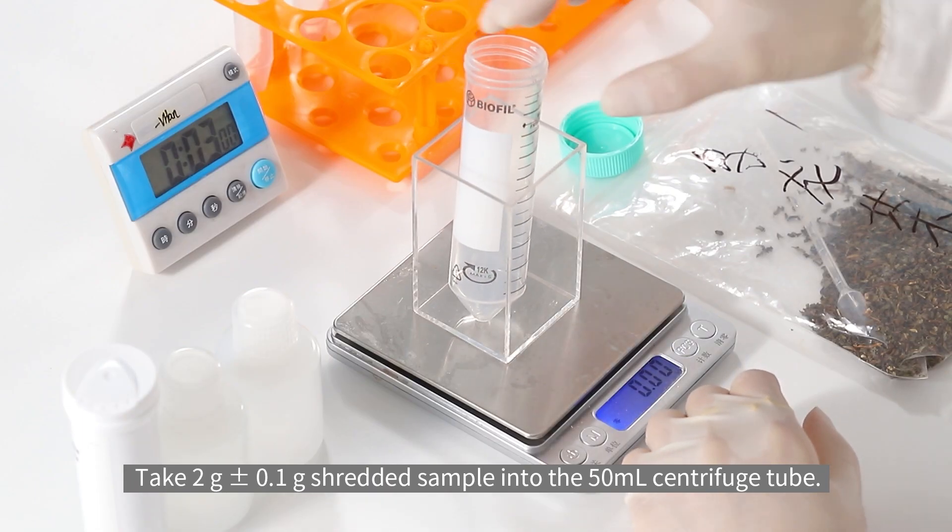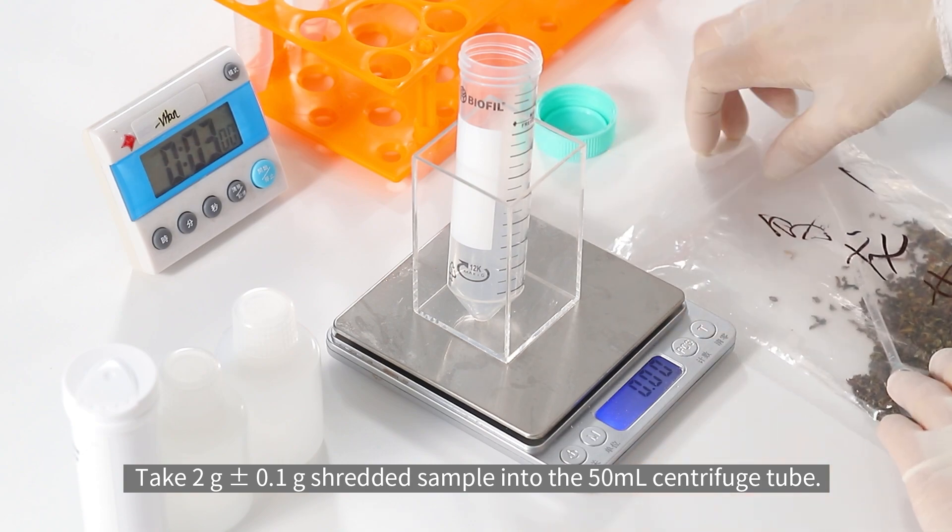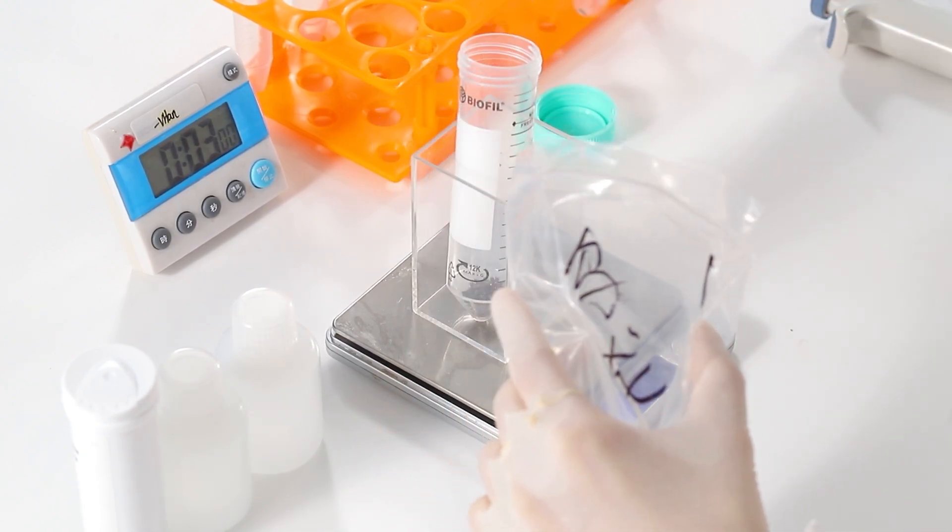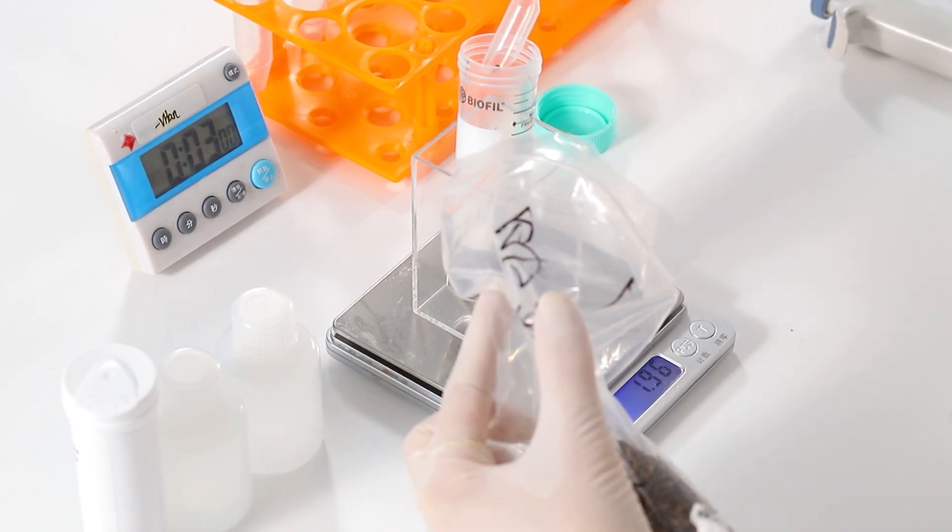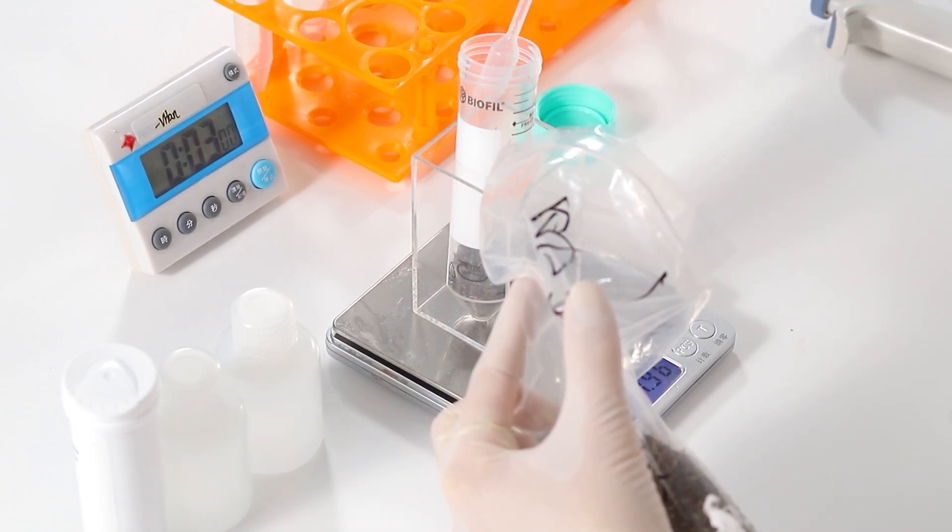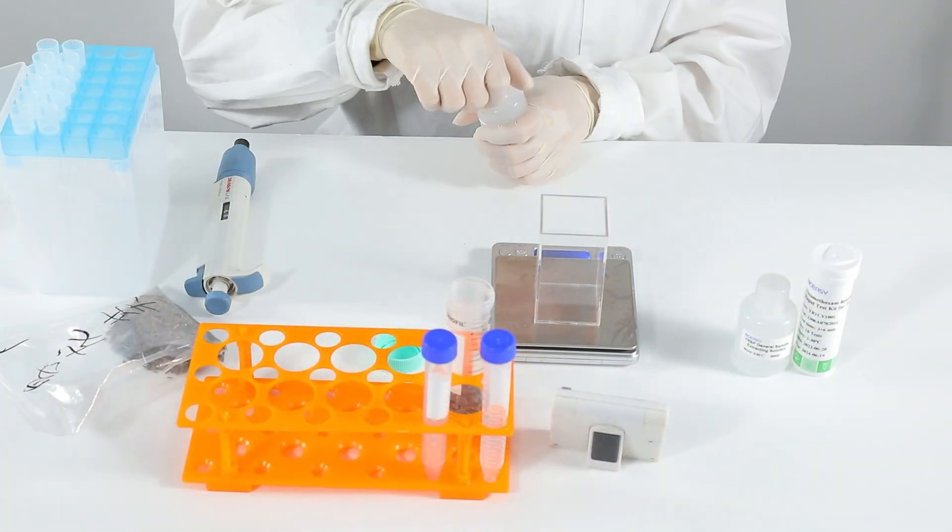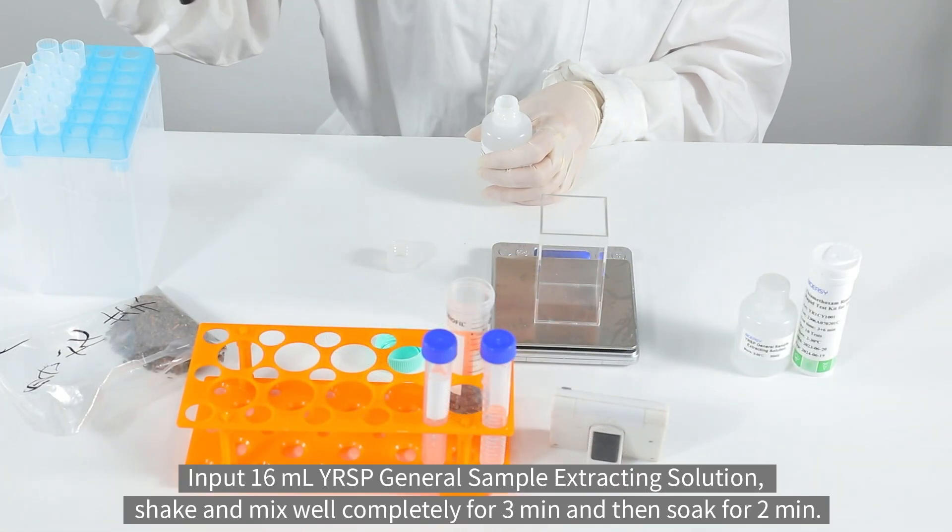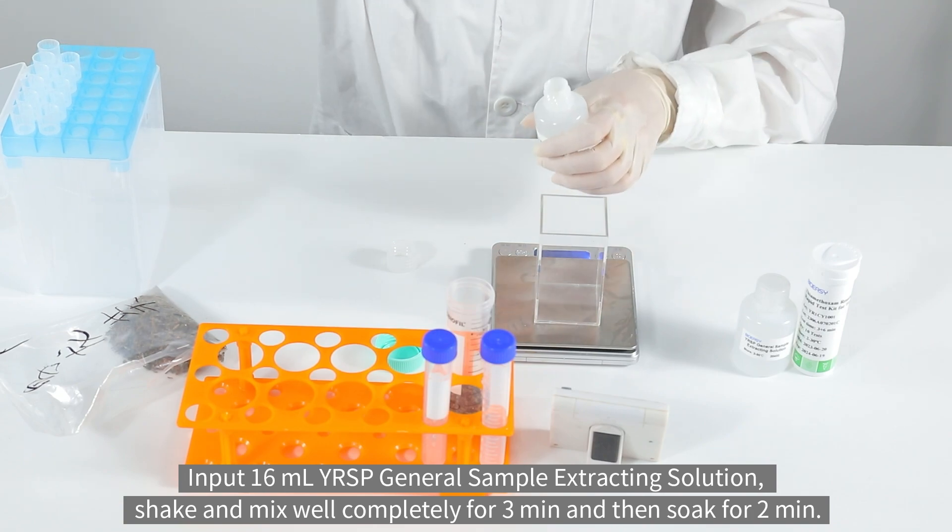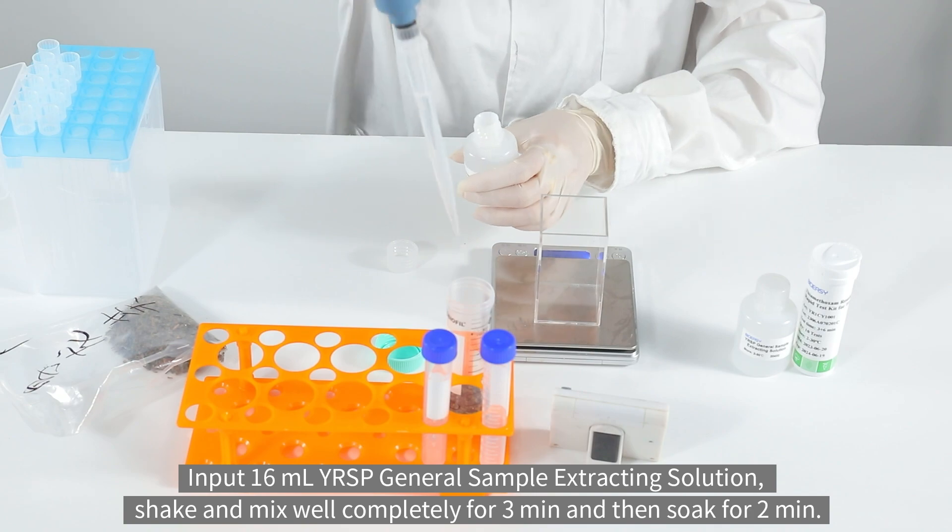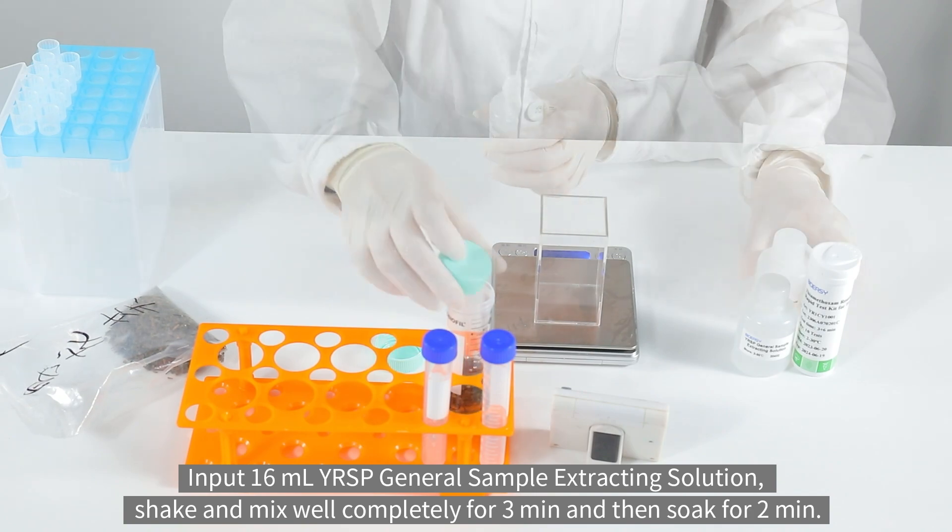Take 2g shredded sample into the 50ml centrifuge tube. Input 16ml YRSP General Sample Extracting Solution, shake and mix well completely for 3 minutes and then soak for 2 minutes.